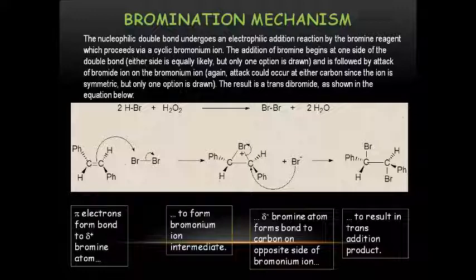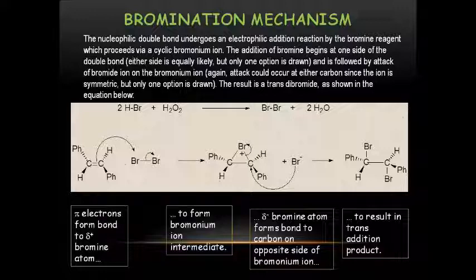The nucleophilic double bond undergoes an electrophilic addition reaction with the bromine reagent, which proceeds via a cyclic bromonium ion. The addition of bromine begins at one side of the double bond and is followed by the attack of bromide ion on the bromonium ion from the opposite face. The result is the trans-dibromide, as shown in the equation.